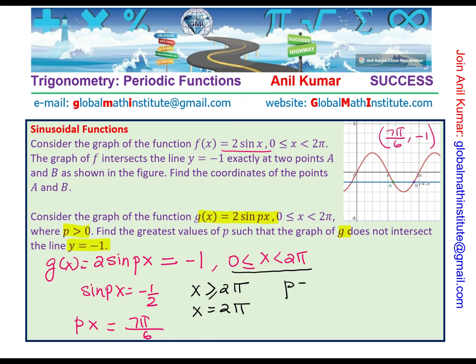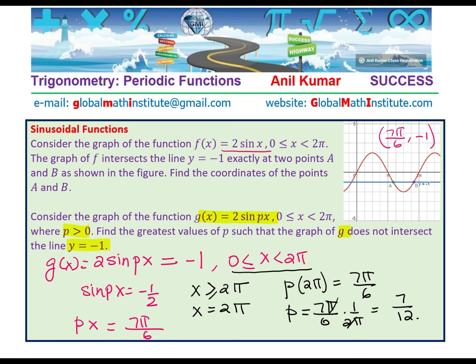We can now write p times x = 2π equals to 7π/6. That means p is 7π/6 times 1 over 2π. If π and π cancel, we get 7 over 12. So, the value of p is 7/12. You get the idea?